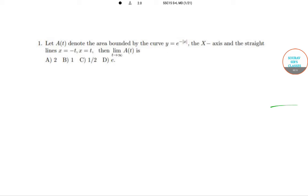The first question is: Let A(t) denote the area of the function made by the curve y = e^(-|x|), the x-axis, and the straight lines x = -t and x = t. Then they have asked you for the limit of A(t). This is a functional format-based structure.